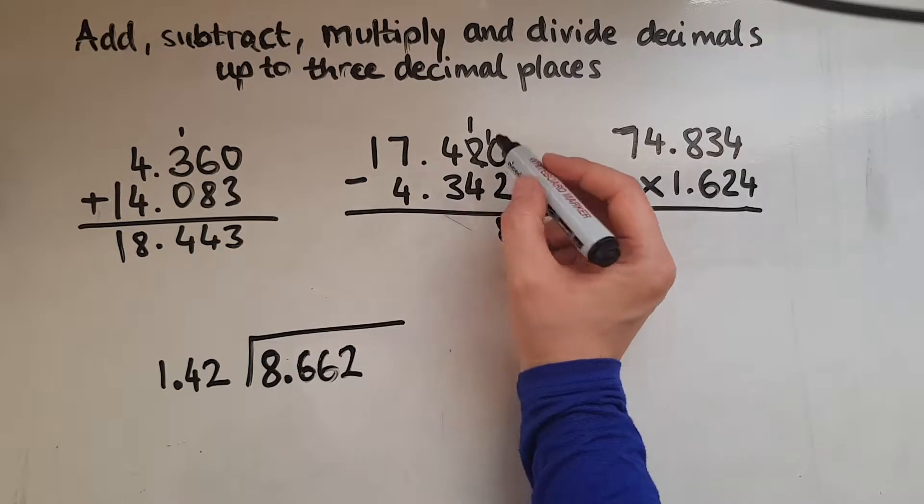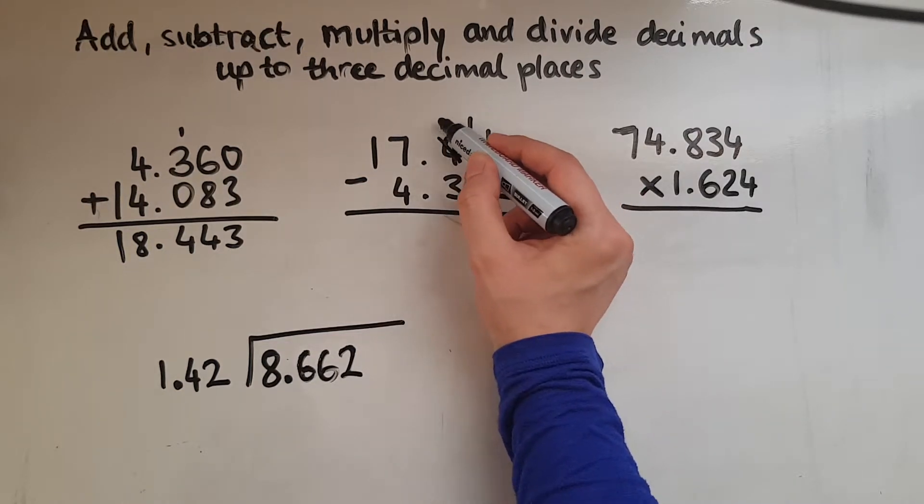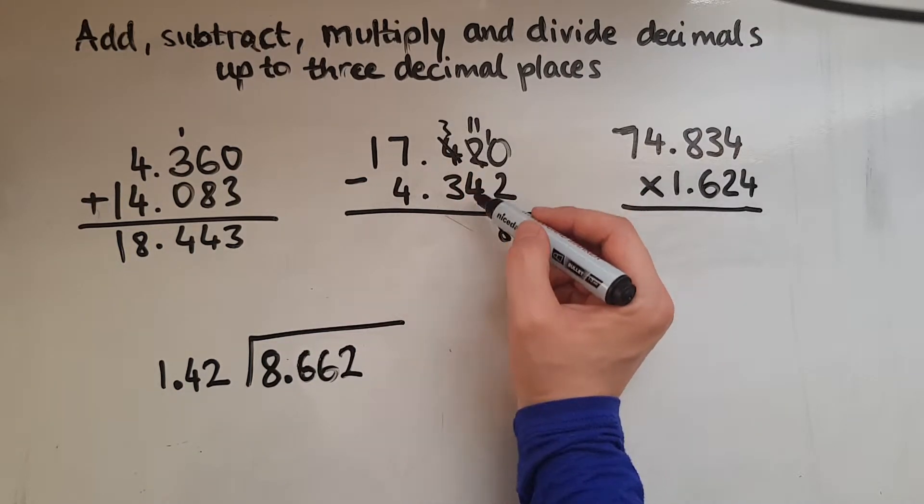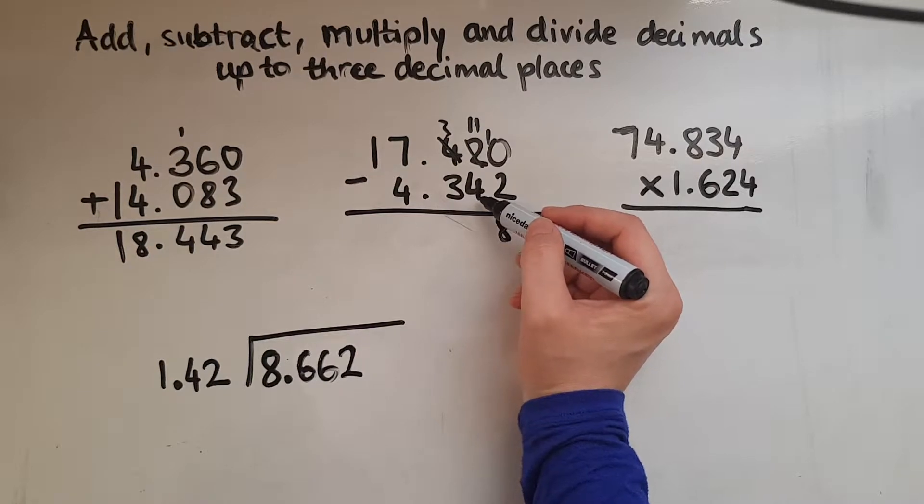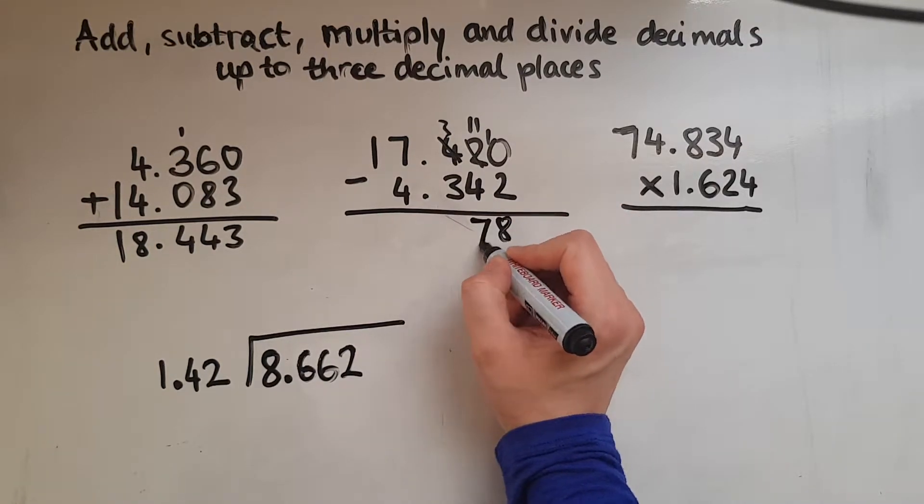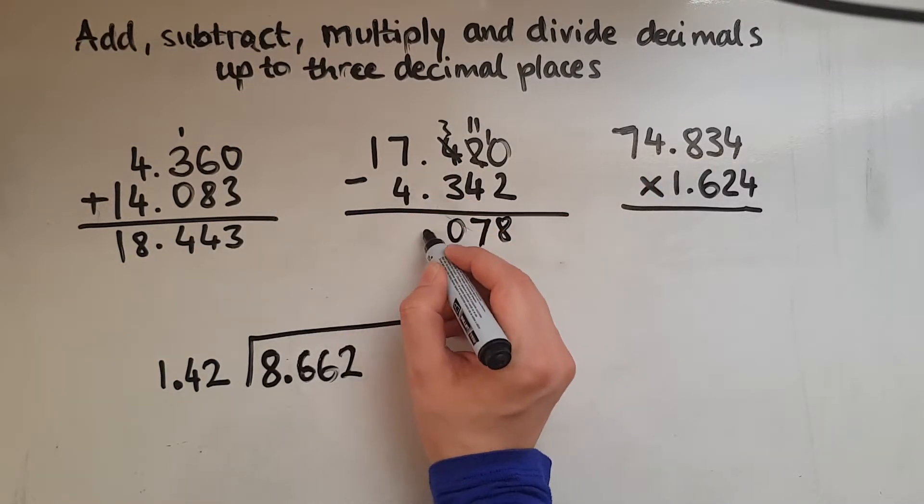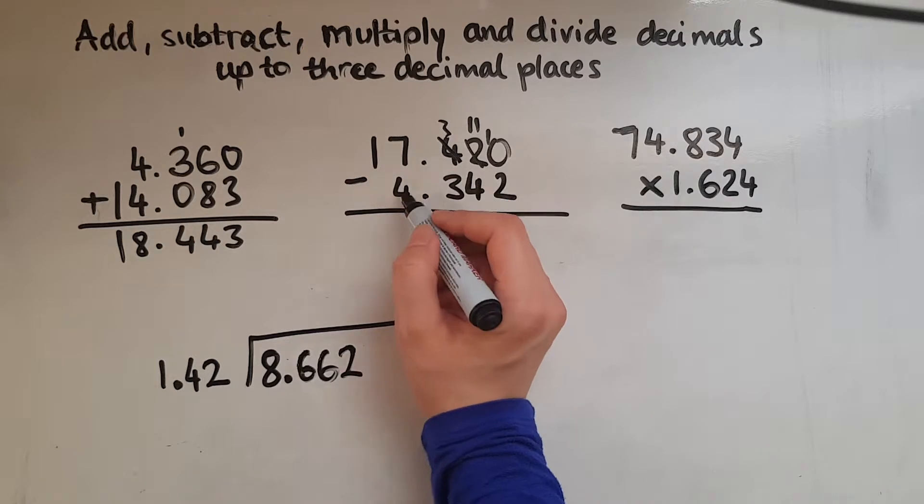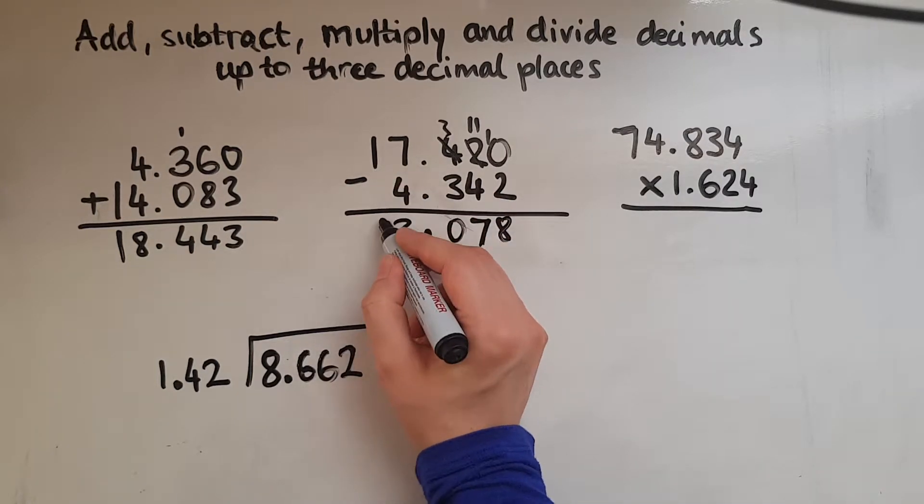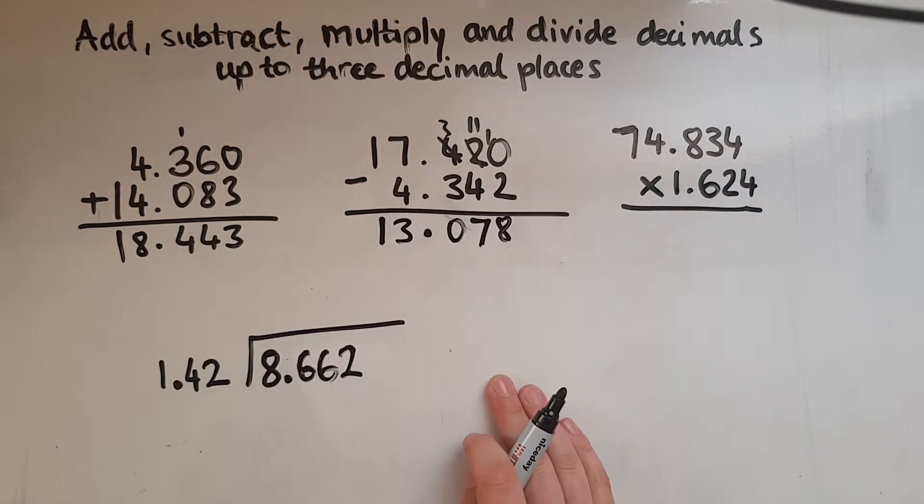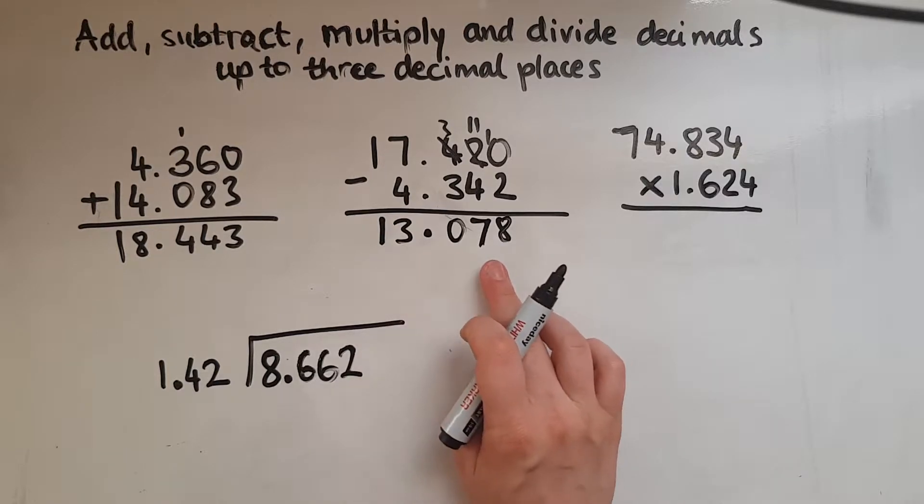1 take away 4 gives us a negative so we'll borrow 1 here so this becomes 11. 11 take away 4, that will give us 7. And 3 take away 3 gives us 0. Transfer the decimal point. 7 take away 4 gives us 3. 1 take away 0 is 1. So the answer is 13.078.